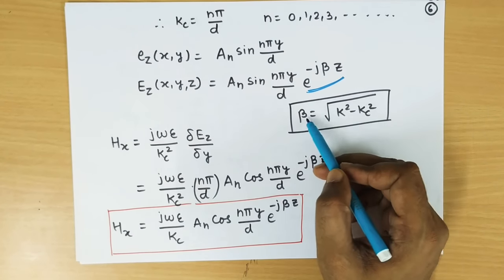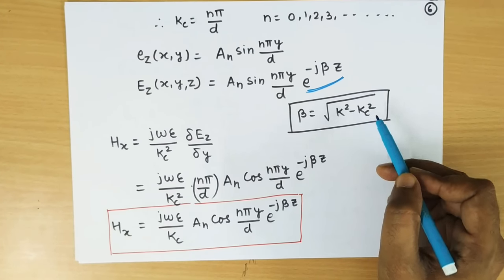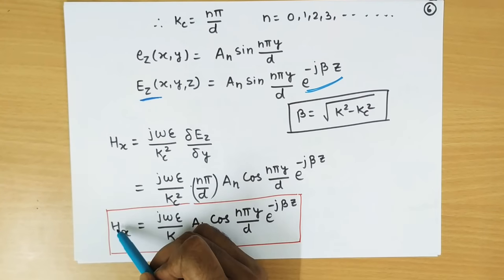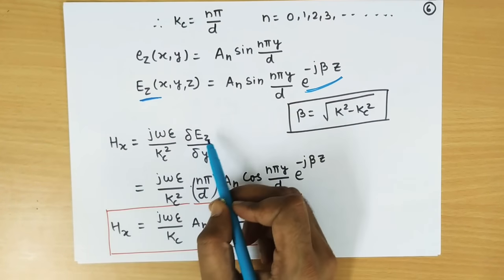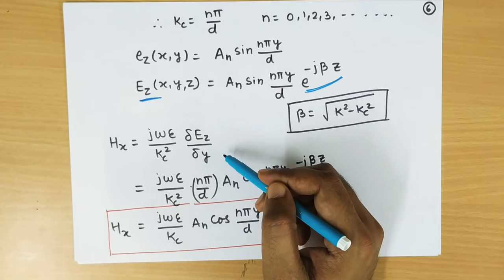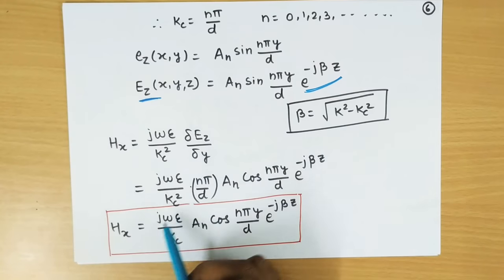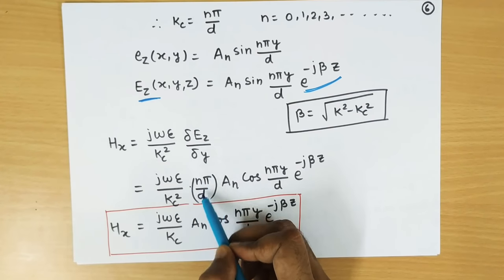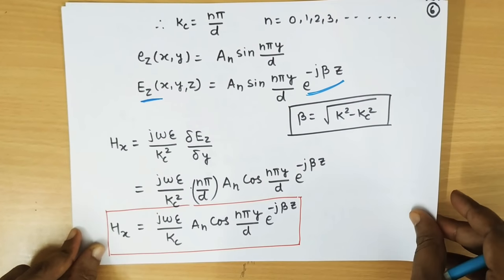Here beta is the square root of k squared minus k_c squared, and k_c is the cutoff wave number. To find the transverse components from E_Z, we can use the standard transverse field expressions, since the only longitudinal component is E_Z and H_Z is already 0. For derivation of these expressions, you can refer to my video on general equations for TE and TM waves. Taking the differentiation, we find E_X, and since k_c equals n pi over D, one of the k_c factors cancels, leaving the denominator as k_c. Similarly we can find the other three field components.